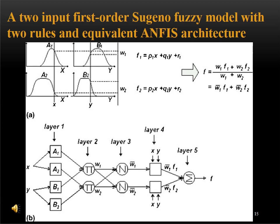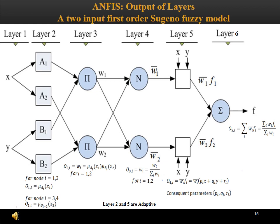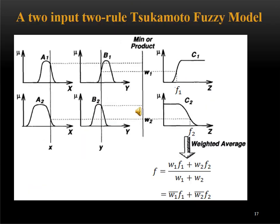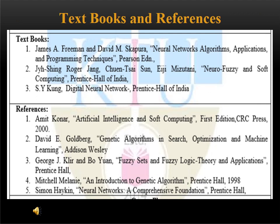A two-input first-order Sugeno-Fuzzy model with two rules and its equivalent ANFIS architecture is shown here, summarizing everything we have learned with equations shown below each layer. A two-input, two-rule Sugeno-Fuzzy model is also shown here. These are the textbooks and references you should go through. Please also refer to my PPT uploaded in my cloud storage, which will give you more information. If you have any queries, please feel free to call me. Thank you very much and have a good time.